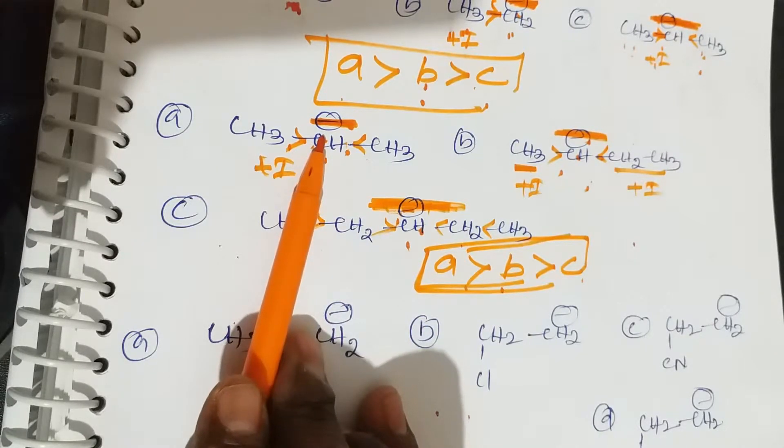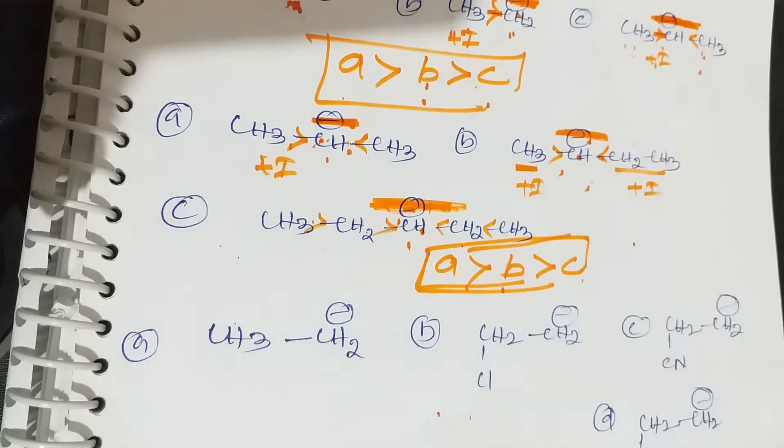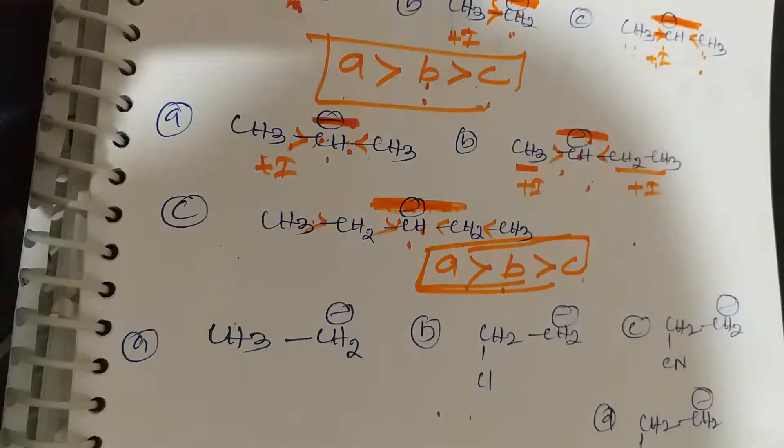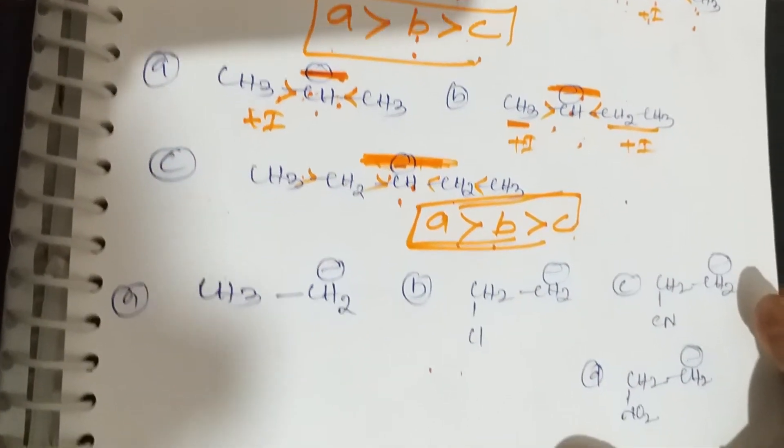That is why A is the most stable. This is the stability of carbon anion: compound A contains the least negative charge, hence it is more stable.